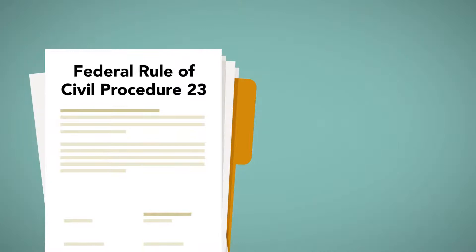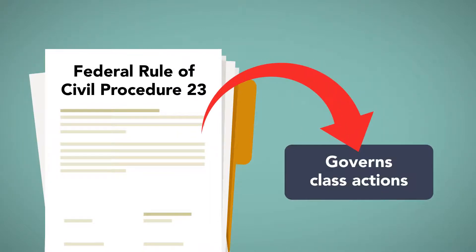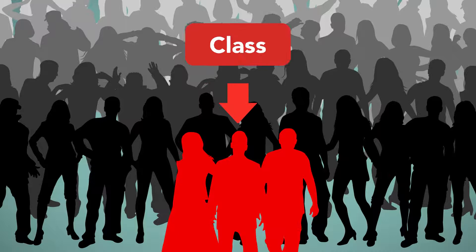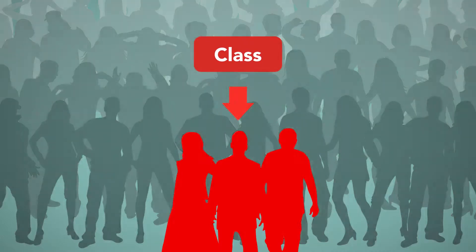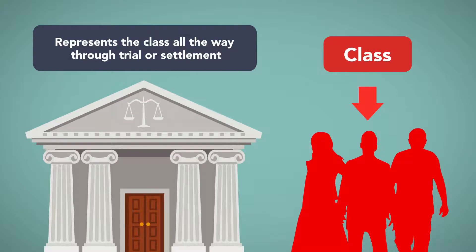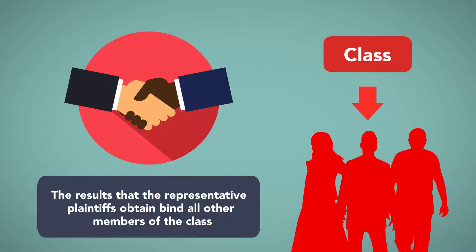Federal Rule of Civil Procedure 23, one of the longer and more complex federal rules, governs class actions. In a class action, one person or a small group of people who share similar claims within a large group of others acts as the representative of the group in a collective court proceeding. This group is called the class. Once the class is formed, the class representative represents the class all the way through trial or settlement.